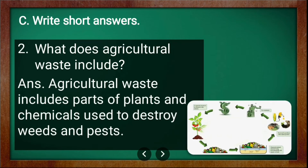Second short answer question: what does agricultural waste include? Agricultural waste includes parts of plants and chemicals used to destroy weeds and pests.